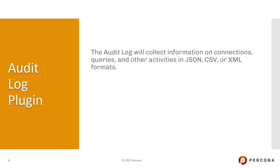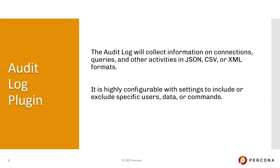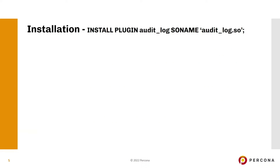The audit log plugin is used to collect information on connections, queries, and other activities in JSON, CSV, or XML formats. It's very highly configurable, as you'll see in just a little bit, and you can include or exclude specific actions, users, data tables, or commands.